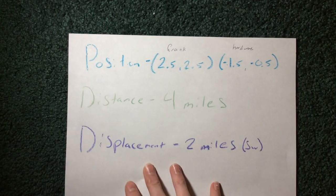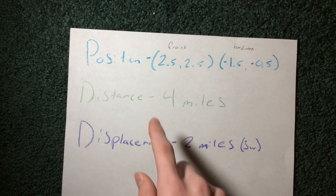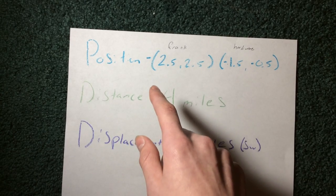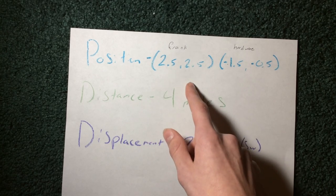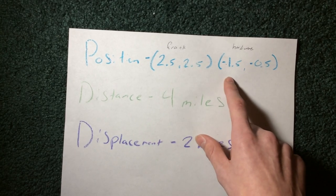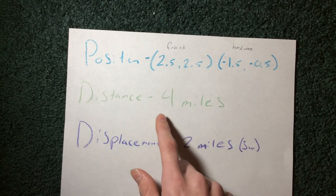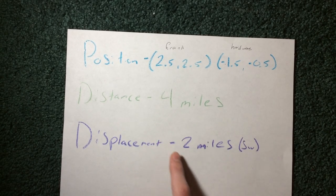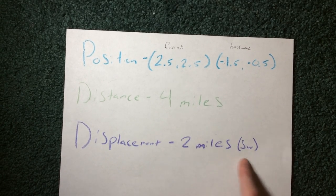Now I have this all written down to make a little bit more sense of it. So we have the position for Frank's house, that would be positive two and a half, positive two and a half. For the hardware store, negative one and a half, negative half. The distance between the two would be four miles, and then the displacement is two miles southwest.